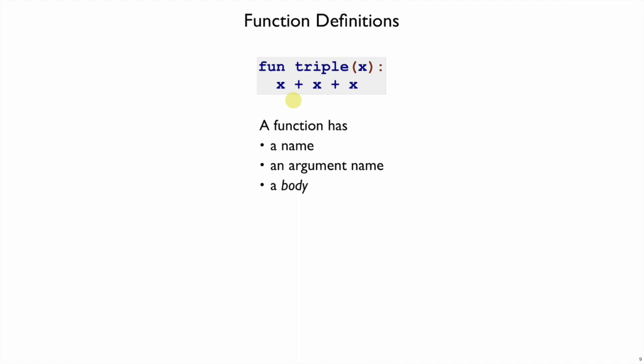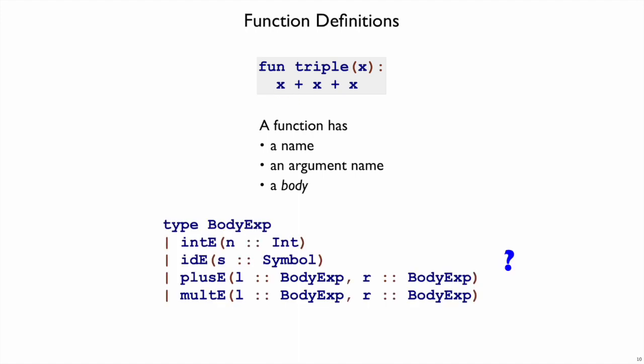It looks like an expression, except it can also have variables like x. So we could introduce a new type, body exp, that's just like exp, but also has identifiers in it, or IDE here is meant to be a name like x, right? So on the inside of that we have a symbol.